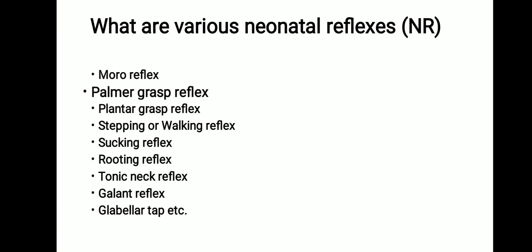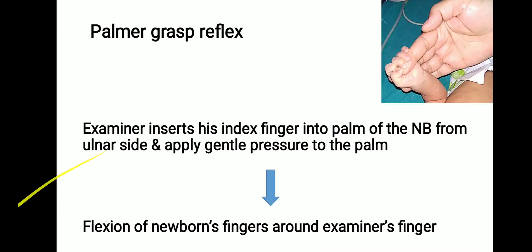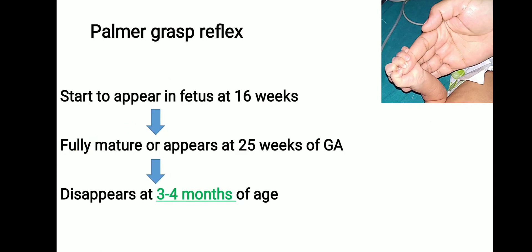To elicit the palmer grasp reflex, the newborn should be in the supine position. The examiner inserts their index finger into the palm of the newborn from the ulnar side and applies gentle pressure to the palm. In response, flexion of all the newborn's fingers around the examiner's finger occurs. In this picture you can see the grasp reflex.